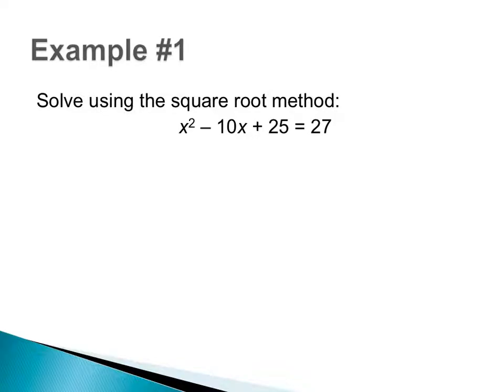So here's example number one — solve using the square root method. Right off the bat, I would say I can't use the square root method right away because I have x squared, yes, but this negative 10x is the issue for us. When you're completing the square, we want the side that has x squared to be a perfect square trinomial.